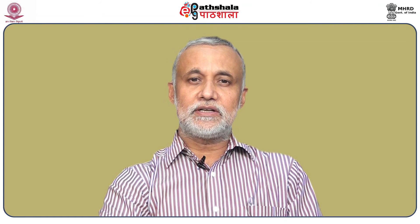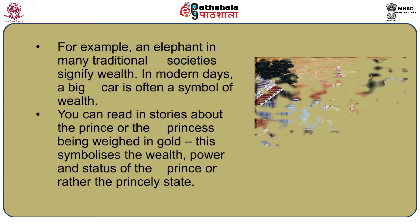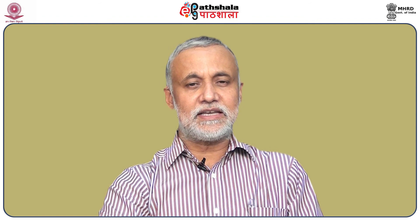While explaining these concepts, Roland Barthes has explained an interesting concept of a third way of signifying through symbols. Here the use of symbols is different from the way C.S. Peirce had used it. For Barthes, an object becomes a symbol when it acquires a particular meaning through convention and use which enables it to stand for something else. For example, an elephant in many traditional societies signifies wealth. In modern days, having a big car is often a symbol of wealth. You can read in stories about the prince or princess being weighed in gold — this symbolizes wealth, power, and status. You can compare how C.S. Peirce has used the same concept and how Roland Barthes uses the same concept.